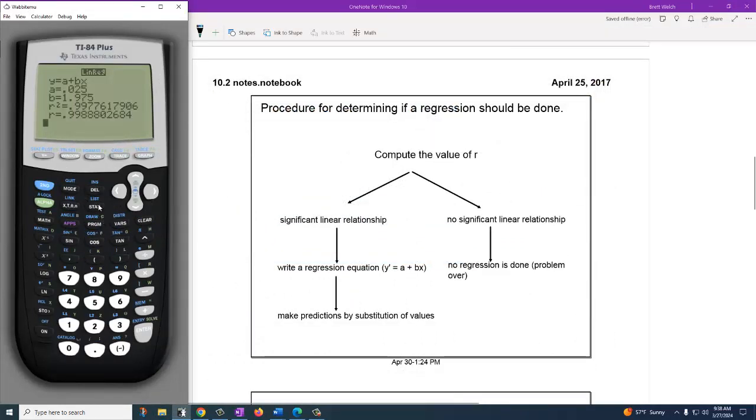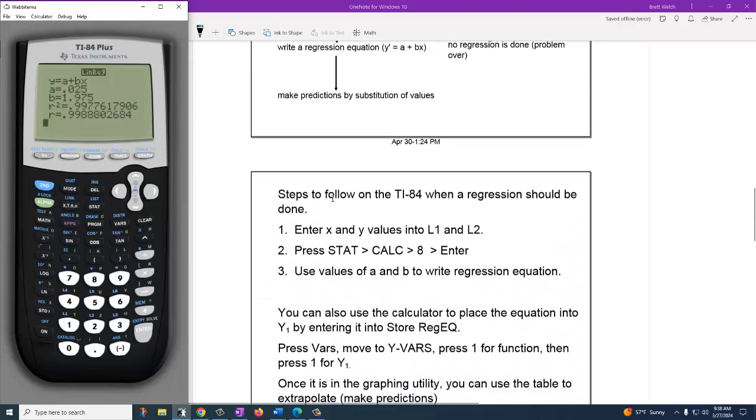Now we've been doing that, and right here in front of me is the equation. a is 0.025, b is 1.975. Notice the slope is really close to 2, and the a is really close to 0. So it's starting, you know, 2, 4, 6, 8 kind of deal.